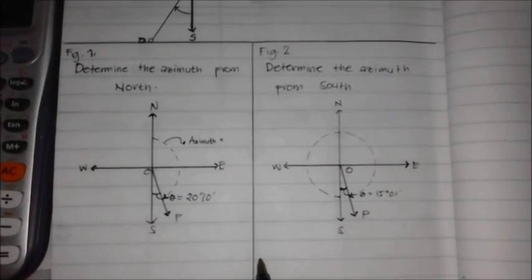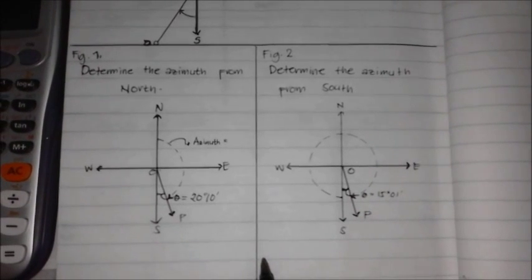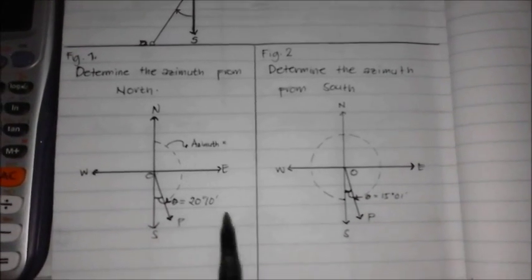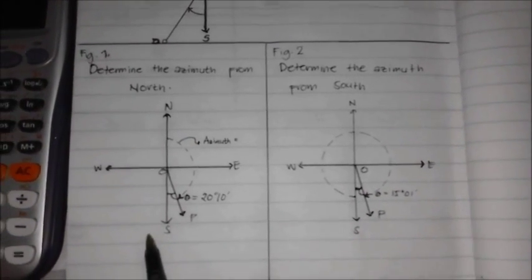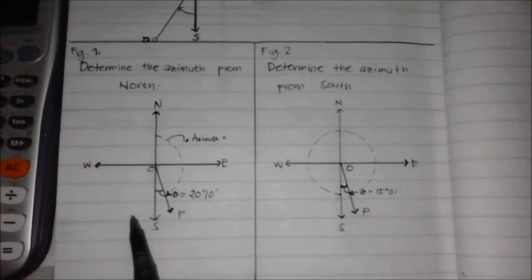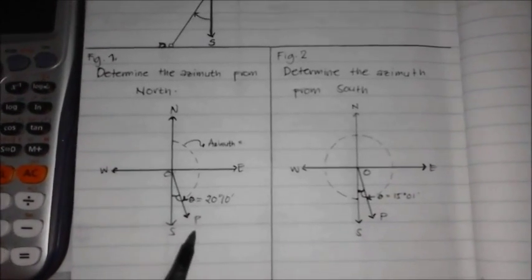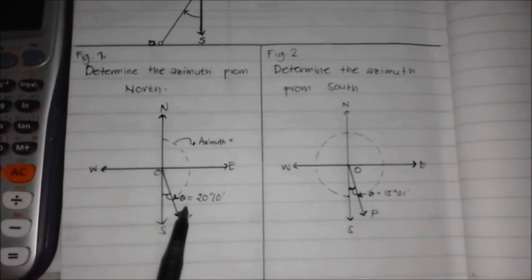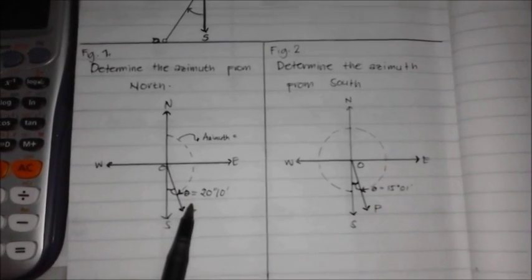We will determine the azimuth of the given problem. In the first figure, we will determine the azimuth from the north. The line OP from the south has an angle of 20 degrees and 10 minutes. So, we have to find the azimuth from the north of the line OP.